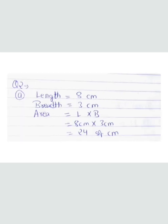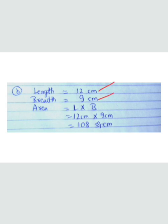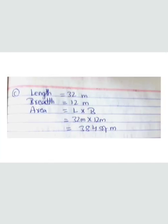Part A: length is 8 centimeters, breadth is 3 centimeters, area is length multiplied by breadth, so 8 cm × 3 cm = 24 square centimeters. Part B: length is 12, breadth is 9, area is 12 × 9 = 108 square centimeters. Part C: length is 32 meters, breadth is 12 meters, area is 32 × 12 = 384 square meters.